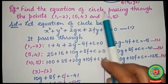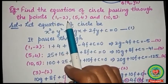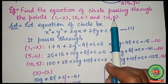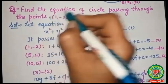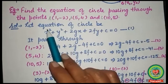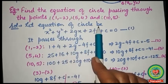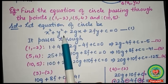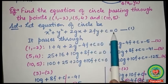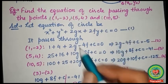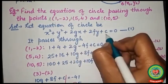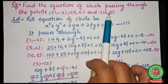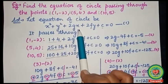Let's take an example: find the equation of the circle passing through the points (1, -2), (5, 4), and (10, 5). These three points are A, B, and C. We start from the general form: let the equation of the circle be x² + y² + 2gx + 2fy + c = 0. To find the equation we need three values: g, f, and c.